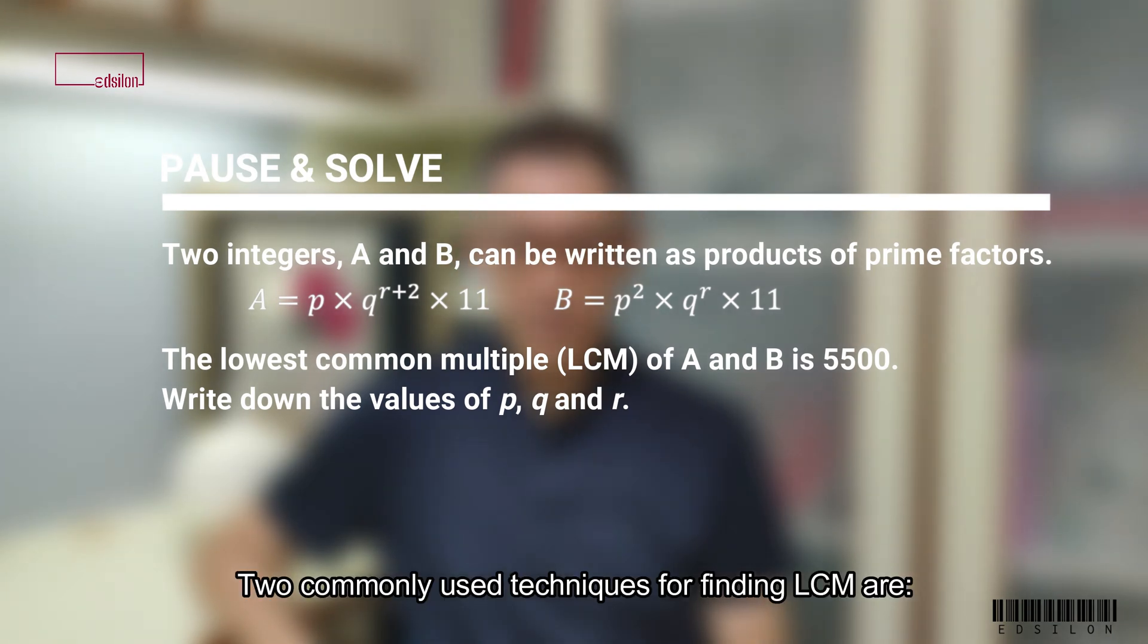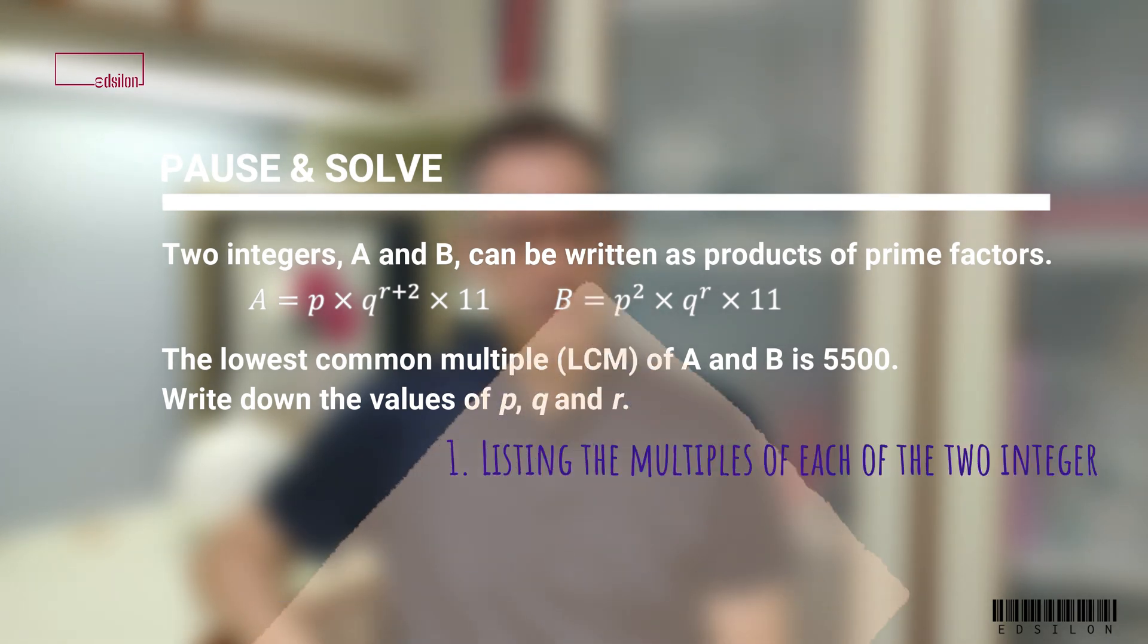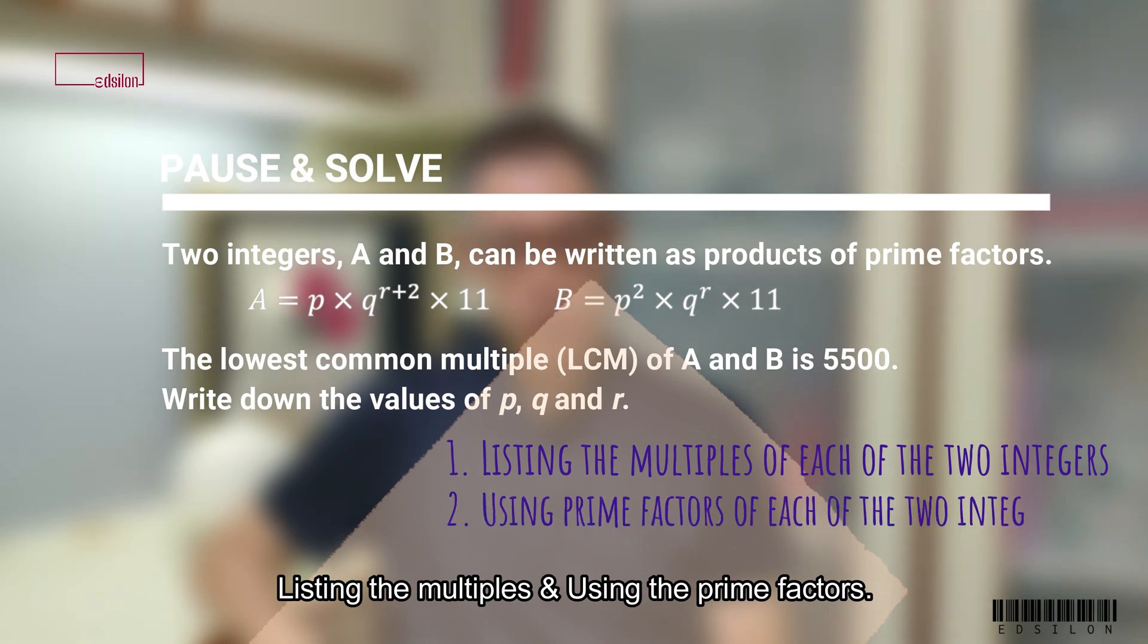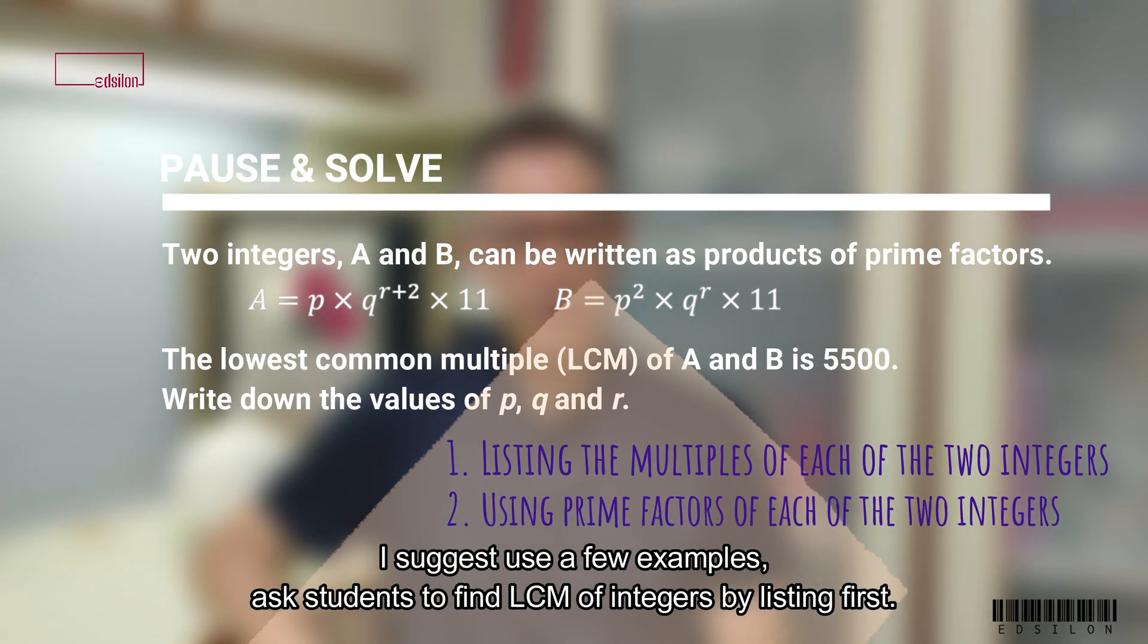Two commonly used techniques for finding LCM are, listing the multiples and using the prime factors. I suggest, using a few examples, ask students to find LCM of integers by listing first.